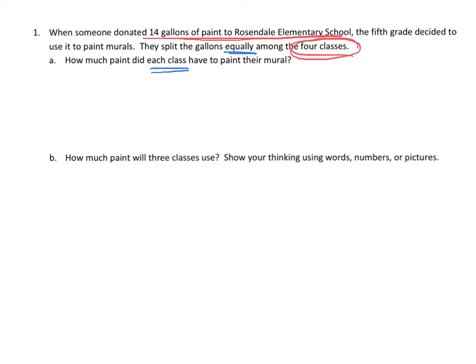So we're going to draw a tape diagram. This tape represents the 14 gallons. And because we know that there were four classes, we're going to cut this into four equal parts. And we're supposed to figure out what one of these pieces is equal to. So if four units equals 14, we know that 14 divided by 4 is going to give us the answer for one class.